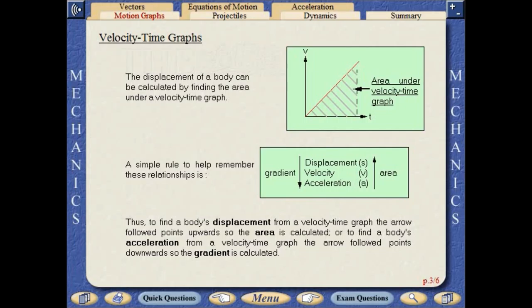The displacement of a body can be calculated by finding the area under a velocity-time graph. Thus, to find a body's displacement from a velocity-time graph, the area is calculated. Or to find a body's acceleration from a velocity-time graph, the gradient is calculated.